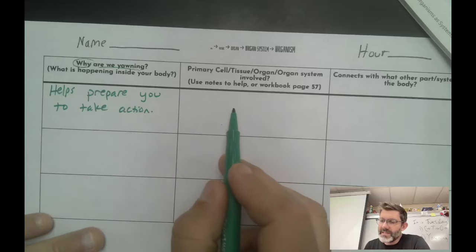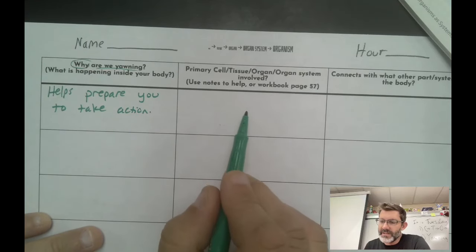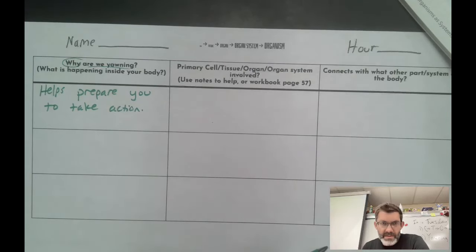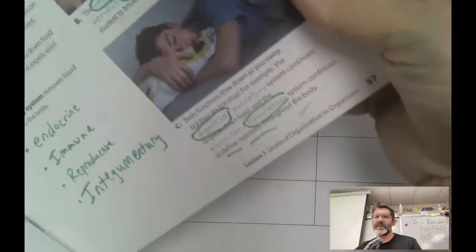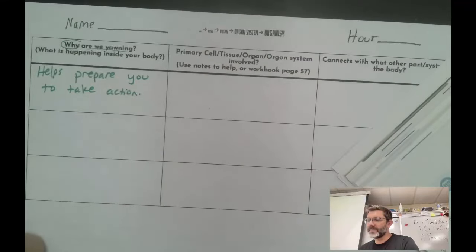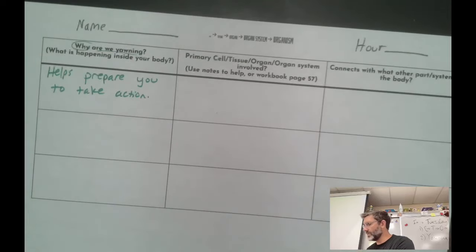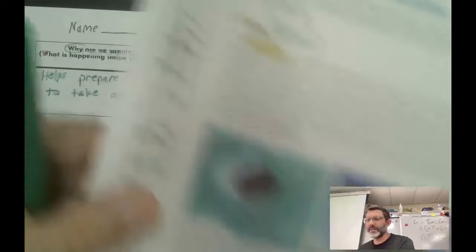Helping prepare you to take action. What are the tissues, organs, cells, organ systems that work together to have this happen? This is where you could possibly go back to your workbook page 47 that we worked on yesterday and kind of get some ideas. You also could go to pages 48 and 49 if you want to add like a tissue type example in here.